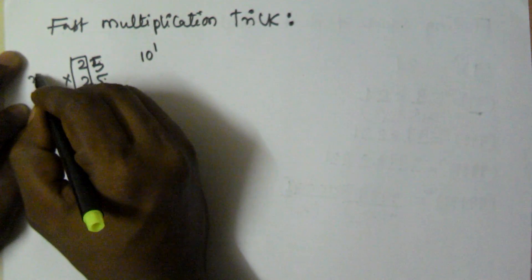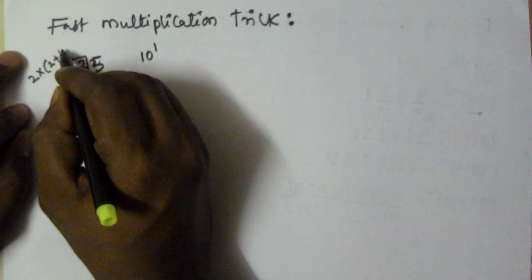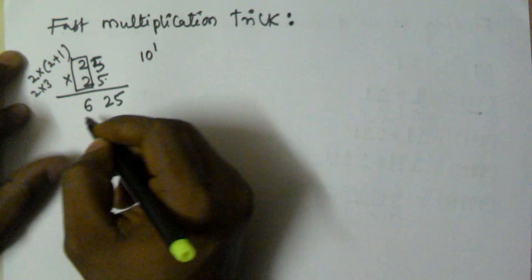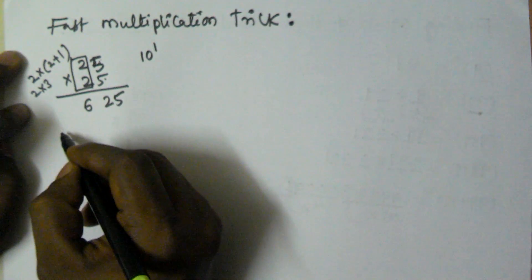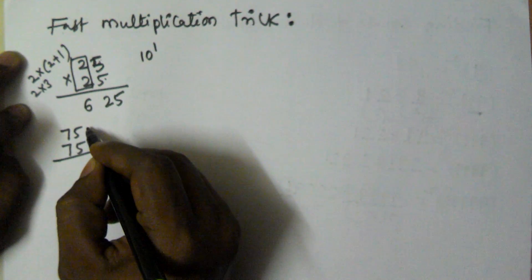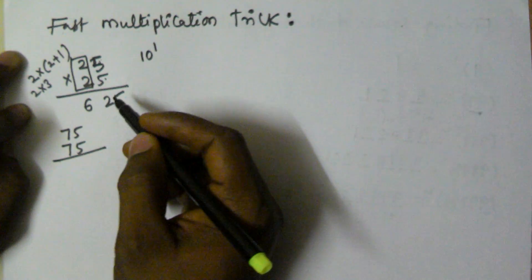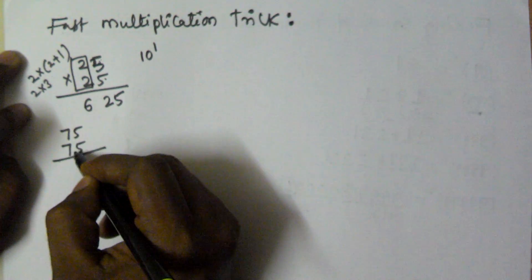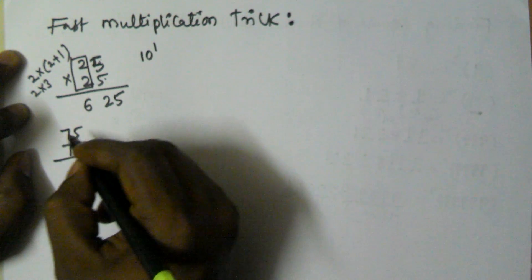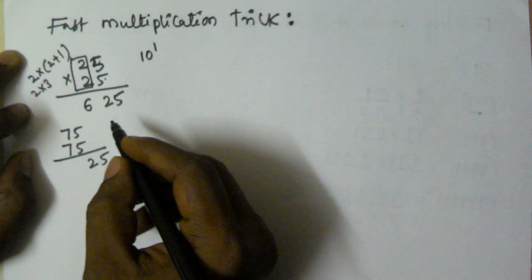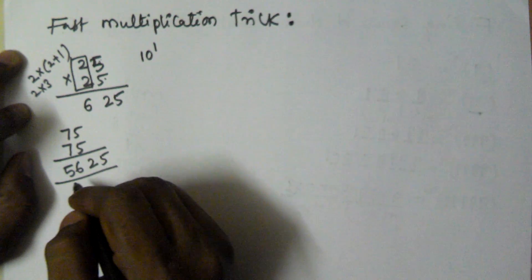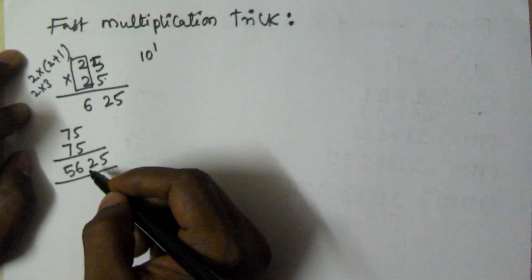Then for the left part: leftmost digit into leftmost digit plus 1, that is 2 into 3, which is 6. So the value of 25 squared is 625. In the same manner, 75 into 75: the rightmost digits sum to 10, leftmost digit is 7. So 5 into 5 is 25, and 7 into 8 is 56, giving 5625.